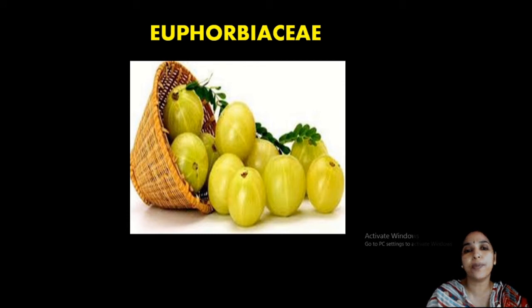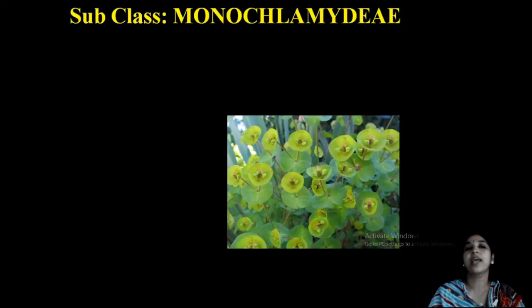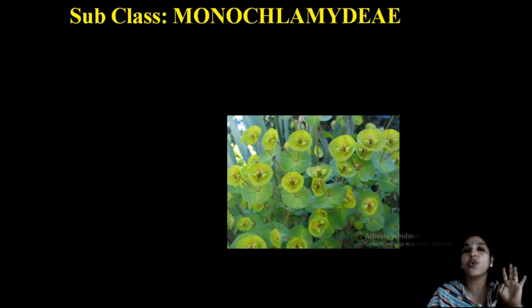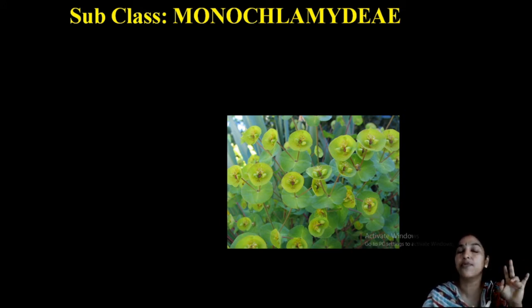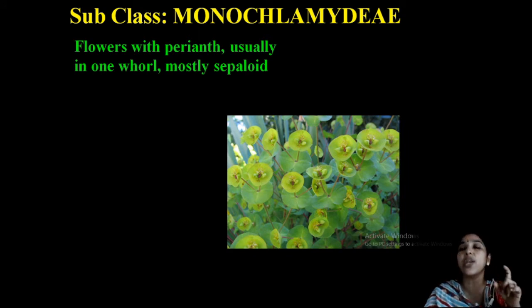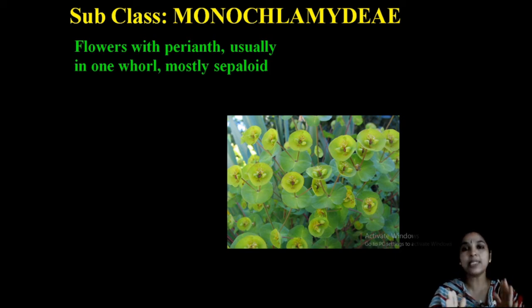The first family is Euphorbiaceae. By looking into the photograph, you can see this family is the family of gooseberry, under the subclass Monochlamydae. In Polypetalae, petals are free; in Gamopetalae, petals are fused; and in Monochlamydae, flowers have a perianth that is usually in one whorl. You cannot distinguish them into sepals or petals — they are mostly sepaloid.